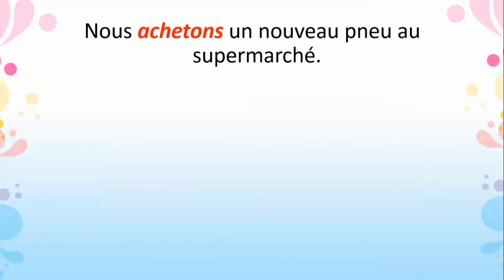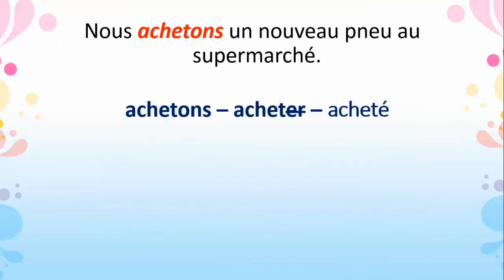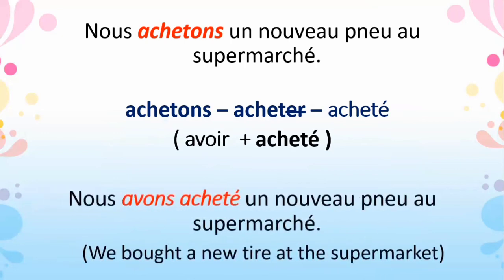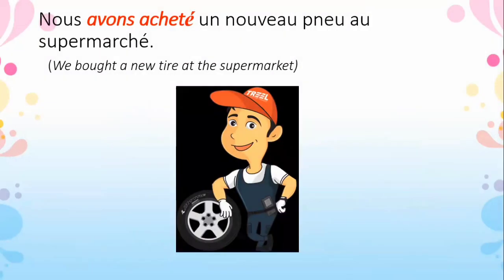Next: 'Nous achetons un nouveau pneu au supermarché' — we buy a new tire at the supermarket. 'Acheter' is a regular -er ending verb, so cut the -er and add é. Avoir plus past participle gives: nous avons acheté un nouveau pneu au supermarché — we bought a new tire at the supermarket.